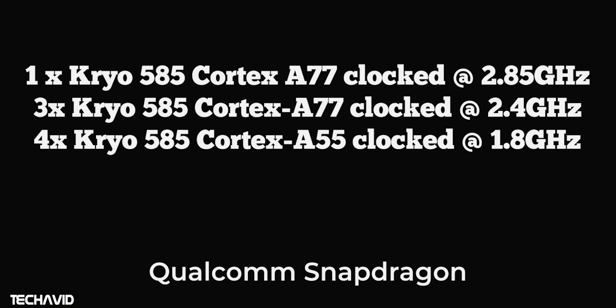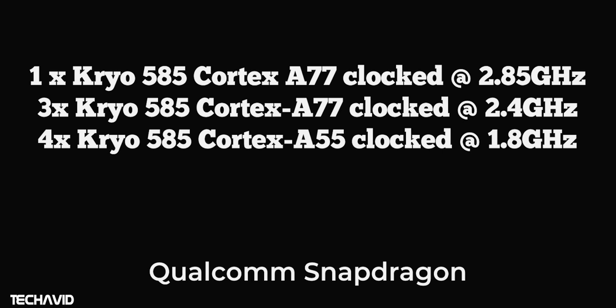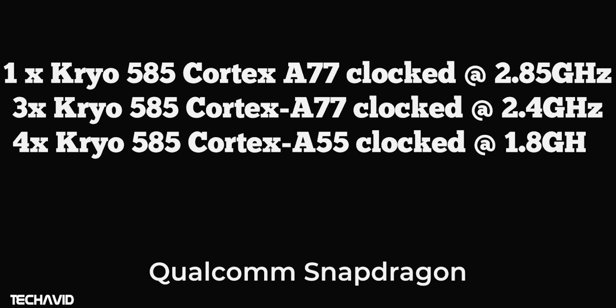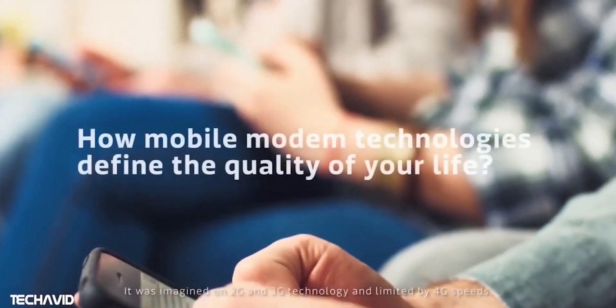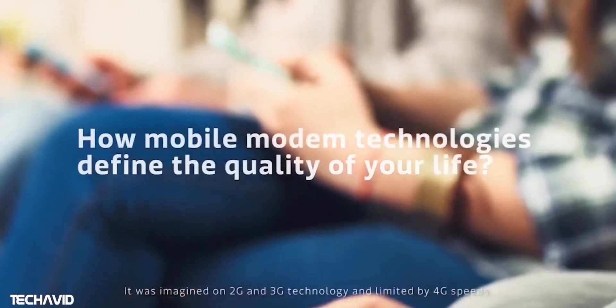The Snapdragon 865 has 1 Kryo 585 Cortex-A77 core clocked at 2.85 GHz — we hoped to see 3 GHz but that didn't happen — 3 Kryo 585 Cortex-A77 cores clocked at 2.4 GHz, and 4 low-powered Kryo 585 Cortex-A55 cores clocked at 1.8 GHz. The MediaTek Dimensity 1000 uses a dual-cluster 4+4 design.